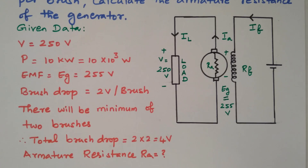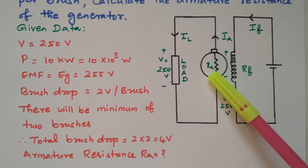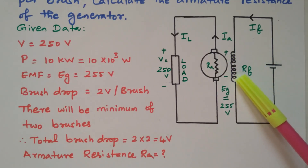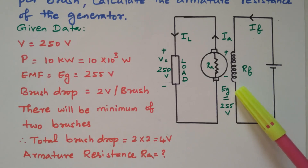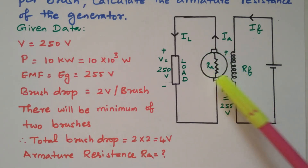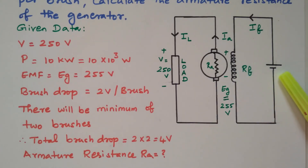This is a separately excited DC generator. Separately excited means we have two main parts: the armature, which is the rotating part, and the field coil, which is the stationary part. These field coils are excited separately by a DC source — that is why it is called a separately excited DC generator. This is the rotating part armature.